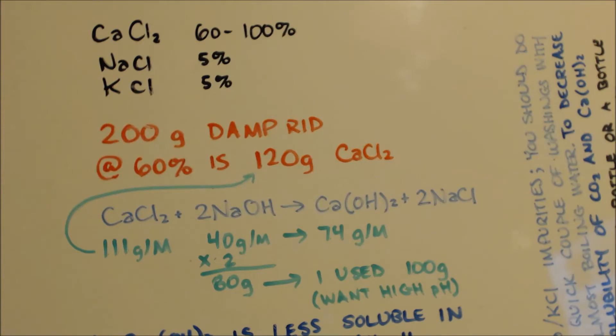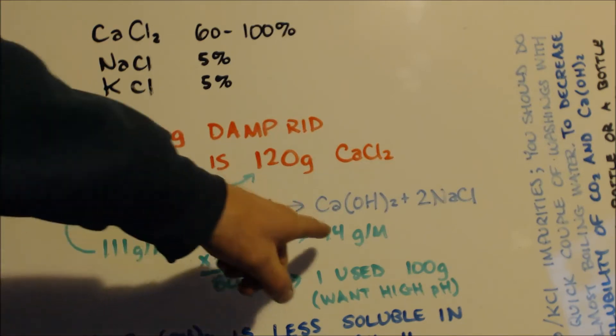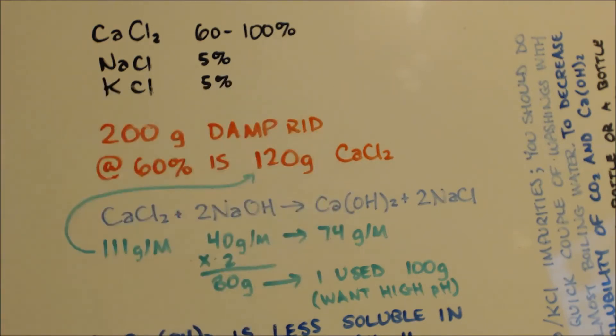That should give us 74 grams — well, actually 10% more — so 84 grams of calcium hydroxide.